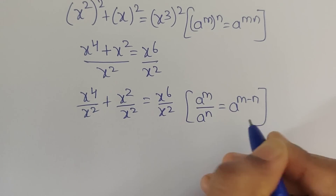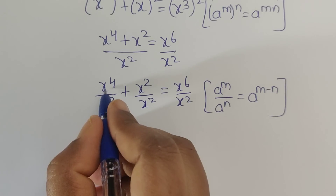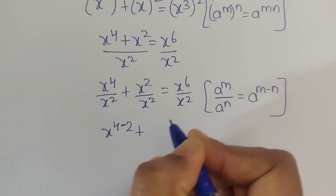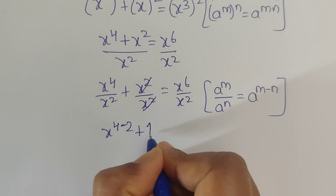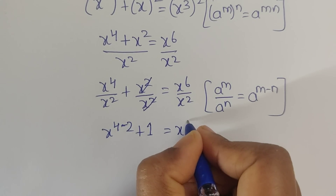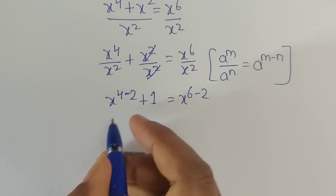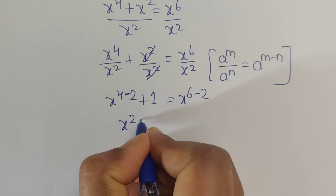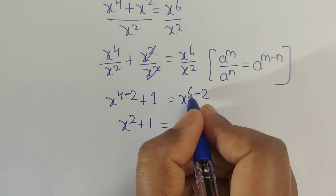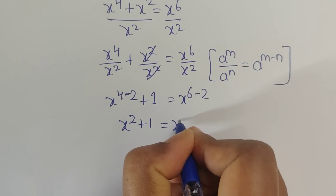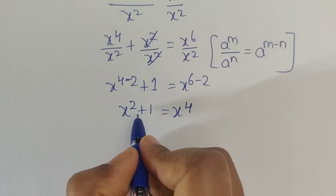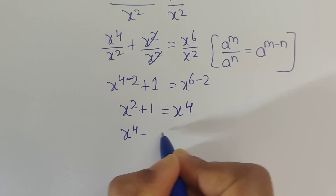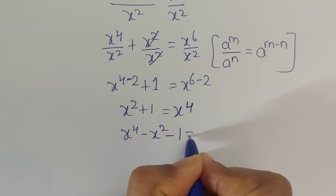Using this formula, we get x to the power of 4 minus 2, and x squared divided by x squared gets cancelled to give 1, equals x to the power of 6 minus 2. So 4 minus 2 gives x squared plus 1 equals x to the power of 6 minus 2, which equals x to the power of 4. Now move this term to the right side, giving x to the power of 4 minus x squared minus 1 equals 0.